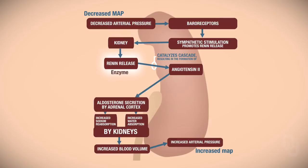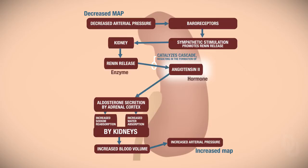The kidneys will then synthesize and secrete renin. Renin is an enzyme, and this enzyme catalyzes a whole series of reactions — which we'll talk more about in the urinary system unit. Ultimately, through these enzyme-catalyzed reactions, there is the formation of a hormone called angiotensin II. This hormone, angiotensin II, then targets the adrenal cortex — specifically the zona glomerulosa.